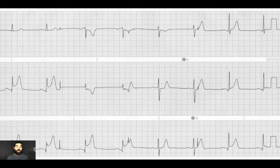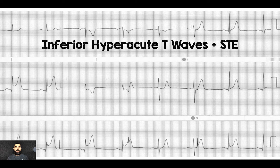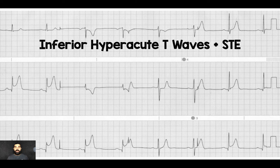Here's another example — a 56-year-old female coming in with crushing chest pain. If you look at the inferior leads II, III, and AVF, you can see not only ST elevations but also hyperacute T waves. Those T waves are broad-based, they're tall, they're taller than the QRS, and the QRS definitely fits inside that T wave.